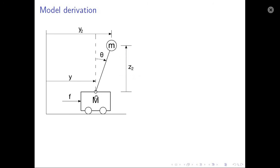Here's the system that we would like to model. It consists of a cart which is free to move horizontally but cannot move vertically. It also consists of an inverted pendulum attached to that cart, with a bob of mass m, which can move around its pivot point, described by an angle that can be positive or negative.